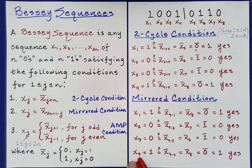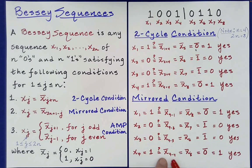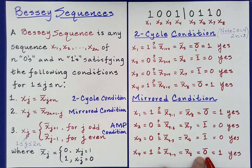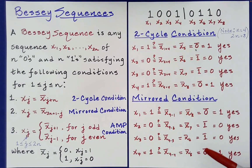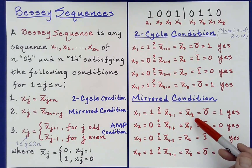Finally for x sub 4, which equals 1: is it equal to the complement of x sub 9 minus 4, which is the complement of x sub 5? The complement of 0 is 1 — yes, that checks out. For the same reason as before, we have also verified the mirrored condition for x sub 5, 6, 7, and 8.